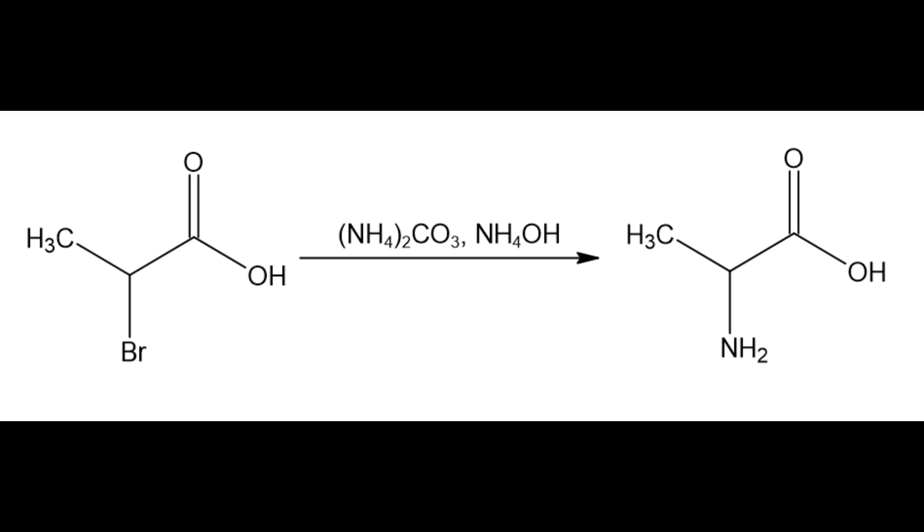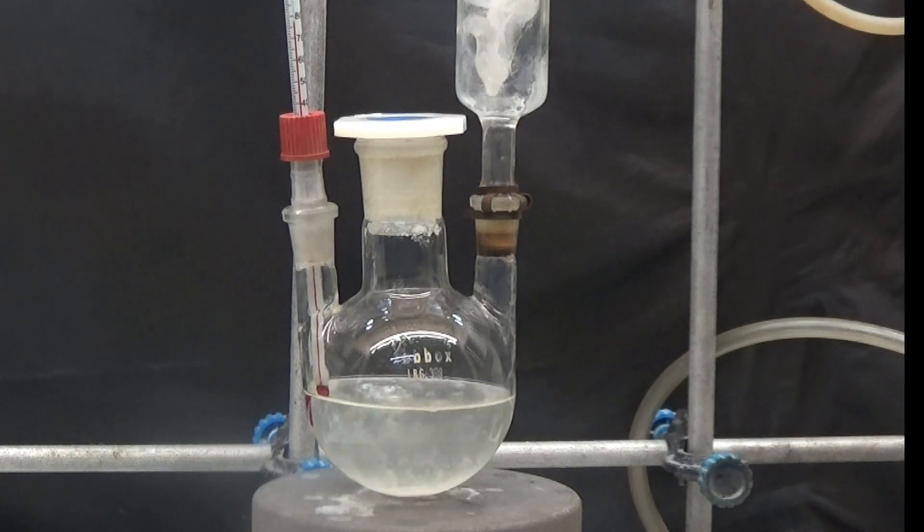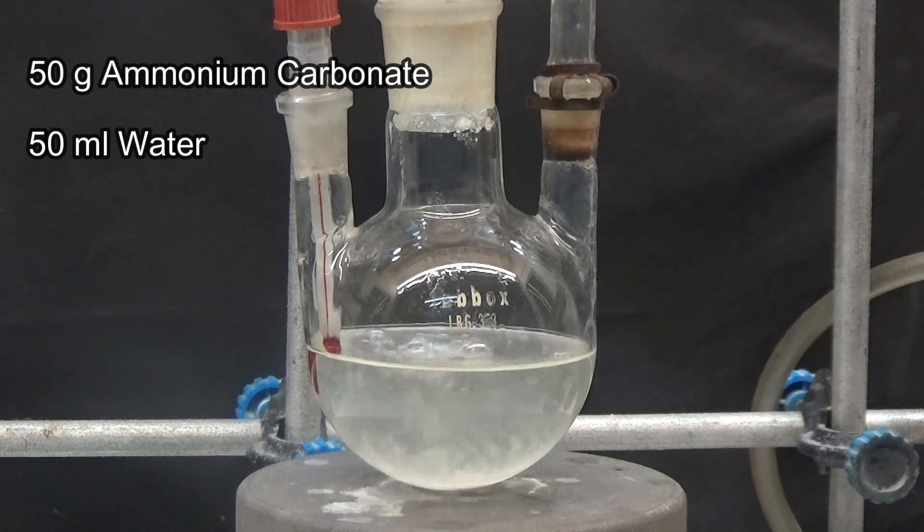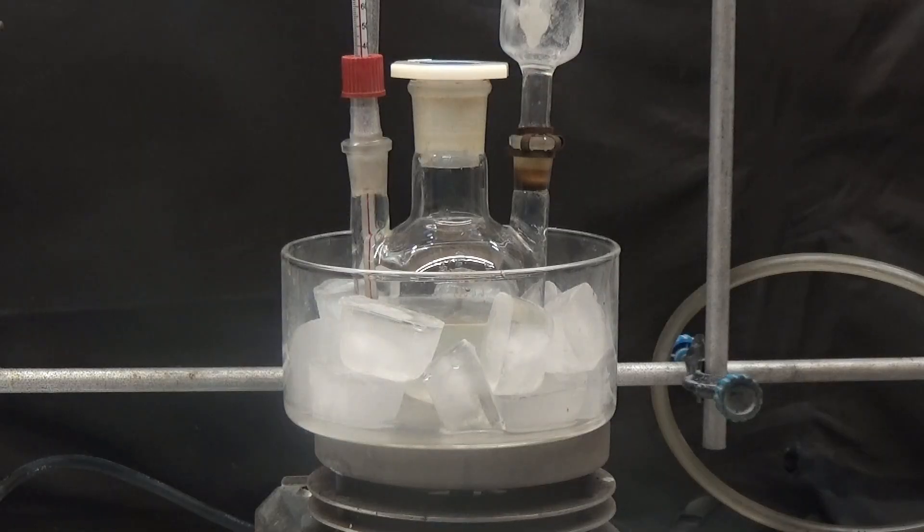We will work in a fume hood or outdoors due to the toxicity of the products used. In a 250 milliliter flask with a reflux condenser and a thermometer, we dilute 50 grams of ammonium carbonate in 50 milliliters of water. Heat to dilute all the carbonate, cool with an ice bath, and put 100 milliliters of 26% ammonia solution in an addition funnel.